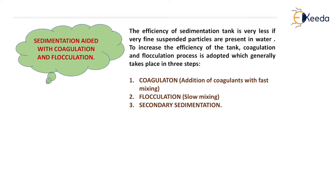To remove that type of particle we generally need certain chemicals known as coagulants, due to which they will grow in size, and after growing in size they will settle down because of their self weight. That type of process is known as sedimentation aided with coagulation and flocculation. The efficiency of the sedimentation tank is very less if very fine suspended particles are present in water. To increase the efficiency of the tank, coagulation and flocculation process is adopted which generally takes place in three steps.